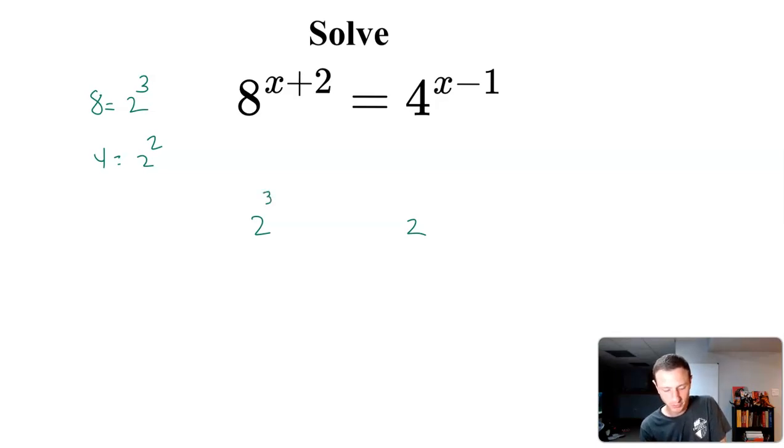So this is going to be 2 to the 3rd, and then we also have this x plus 2, so this is going to be times x plus 2. So I'm just rewriting 8 as 2 to the 3rd. Then on this side, 4 is 2 to the 2nd times x minus 1.